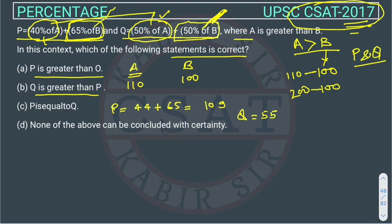And 50% of B. B is 100, so 50% of B will be 50. What value are we getting? 105. In this case, P is greater than Q. In our first case, what did we receive? P is greater than Q.